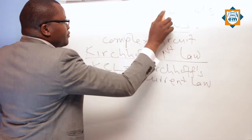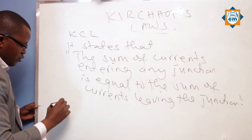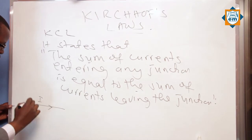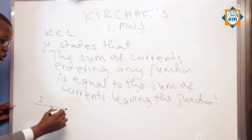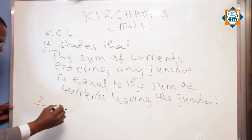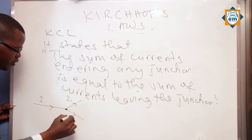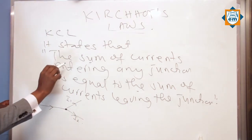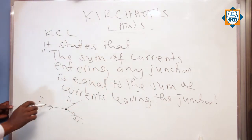Nomba niyaandike hapa. Let's say umeme unaingia katika junction — this is current I. This is our junction. Maanisha nikisema junction, ni point ya mahali ambapo umeme unadivide — point where the current divides. Current nenda huku, let's say this current is I1. Na umeme mwingine unenda huku, tuwite I2. So the law ina state kwamba: the sum of current entering any junction is equal to the sum of the current leaving the junction.